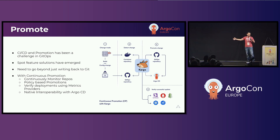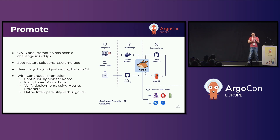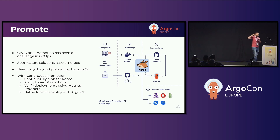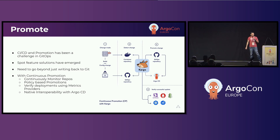We came up with the idea of a missing piece — what we call continuous promotion. There needs to be a way to do promotion that plugs into CI/CD in a GitOps-friendly way. With Acuity's continued commitment to open source, we don't just contribute to the Argo project — we also develop new tools like Cargo and open source them. Cargo is an open source tool that is also part of the Acuity platform, enabling an end-to-end solution.